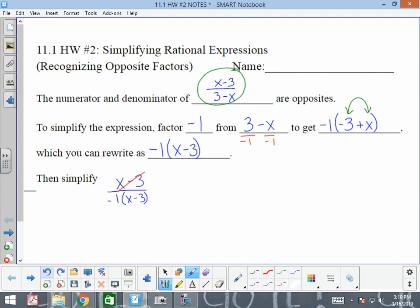Remember, when I'm canceling, those are actually becoming 1s. So now I have 1 over negative 1 times 1, which is 1 over negative 1, which reduces to negative 1.